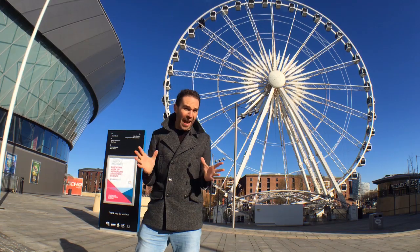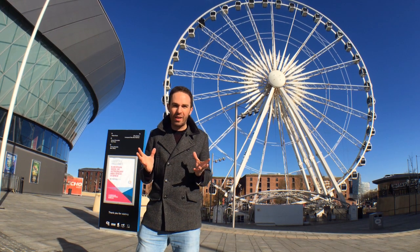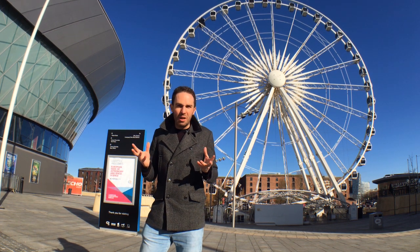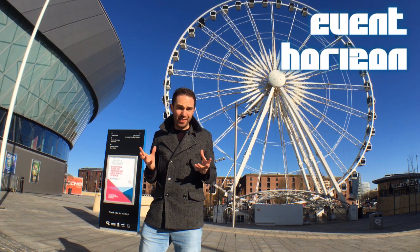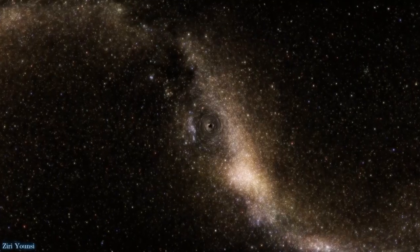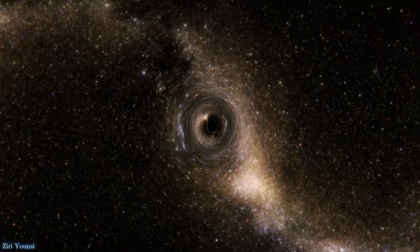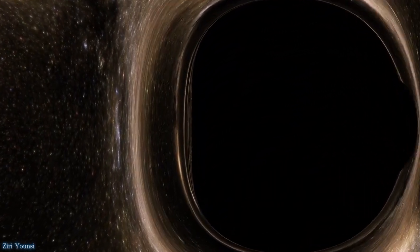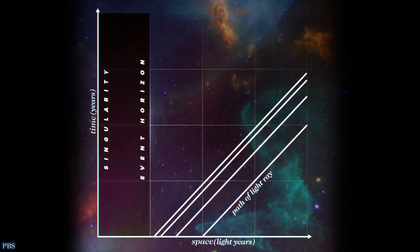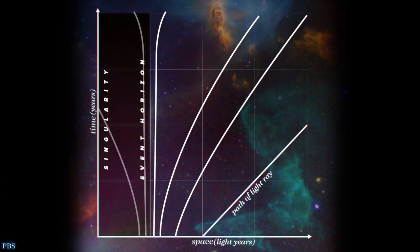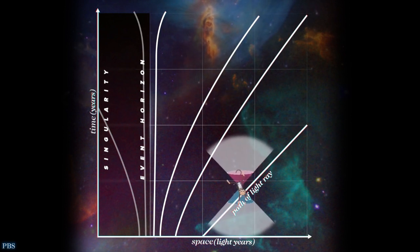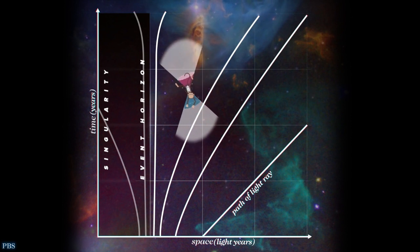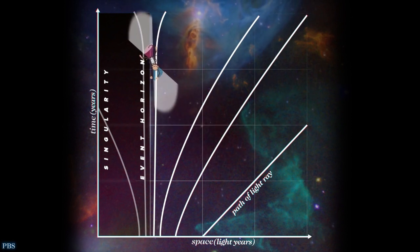One pesky problem with the Infinity Stones being singularities, though, is that they tend to be surrounded by event horizons. In the case of a black hole, you often think of this as its surface, or the point from which light can no longer escape - hence why they're black. More generally, though, an event horizon is a boundary beyond which events cannot affect an outside observer. Or in other words, past the event horizon, all possible paths in space-time lead inwards and not outwards.